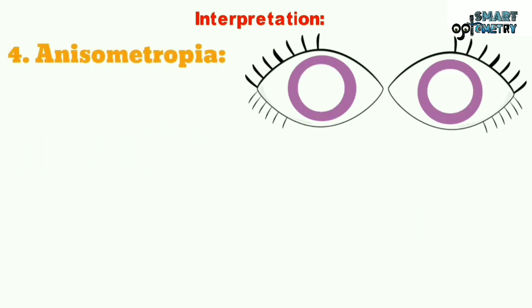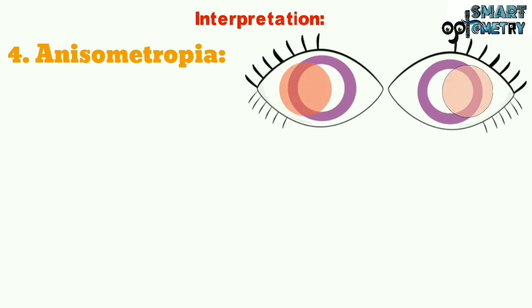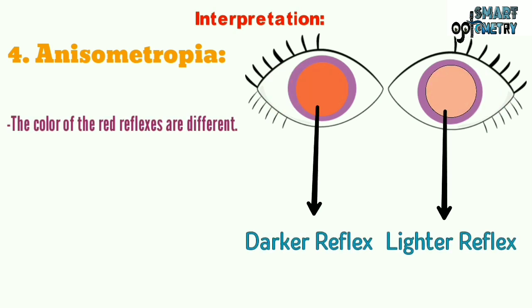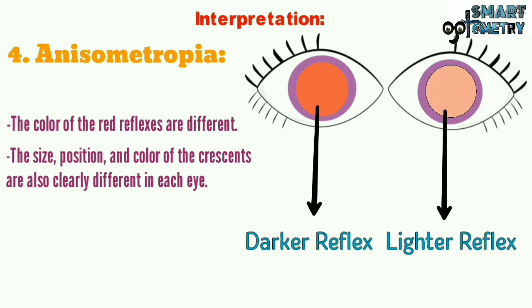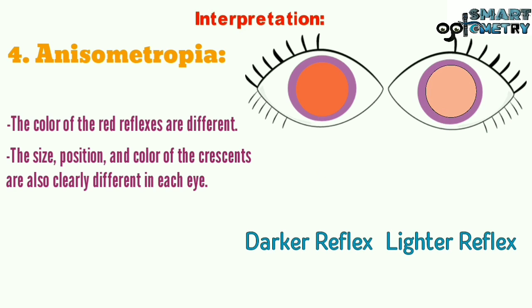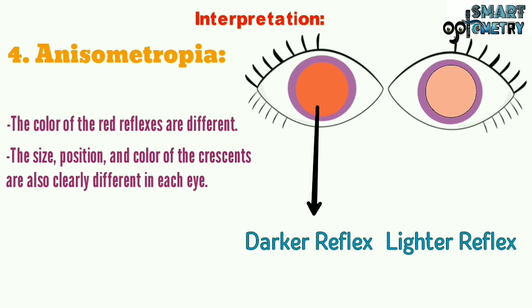4. Anisometropia: The color of the red reflexes are different. The size, position, and color of the crescents are also clearly different in each eye.